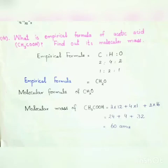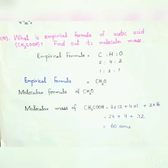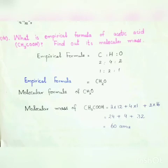To find the molecular mass, we use the formula: number of atoms multiplied by atomic mass. For CH3COOH — carbon has two atoms with atomic mass 12, hydrogen has four atoms with atomic mass 1, and oxygen has two atoms with atomic mass 16. Solving these values gives us 60 atomic mass units. So the empirical formula of acetic acid is CH2O and the molecular mass is 60 atomic mass units.